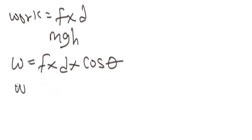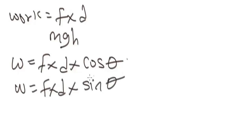the work is calculated using force times distance times sine theta. So take note of this difference: cos theta is used when the force is inclined to an angle horizontally, whereas sine theta is used when the force is inclined to an angle vertically.